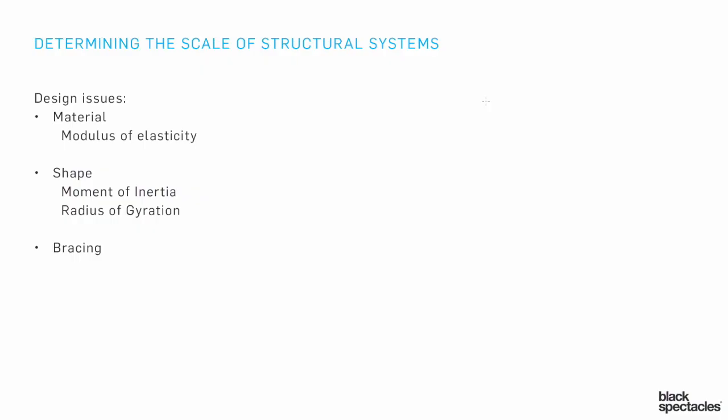The two big issues of any structural design are going to be the shape and the material. When we talk about material, we're talking about steel, concrete, wood — any of these different materials are going to have different aspects to them: more ductile, more strength, more brittle, more strong. Those are all different terms talking about similar sets of issues, so we're very concerned about the specific material choice.